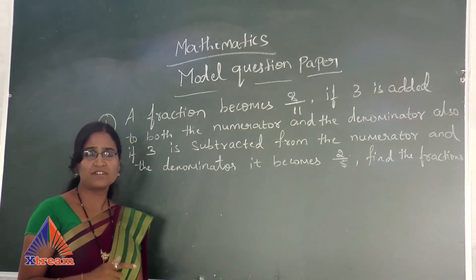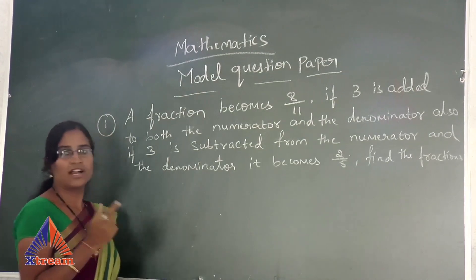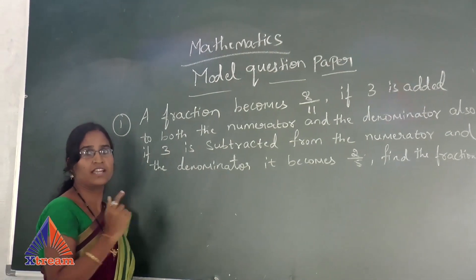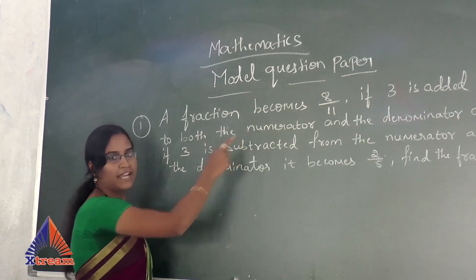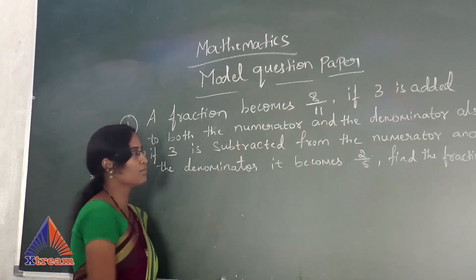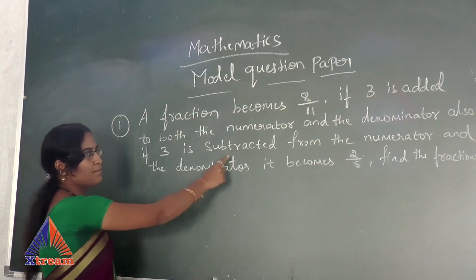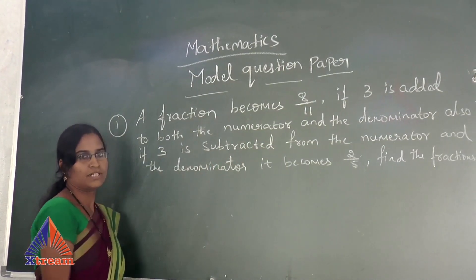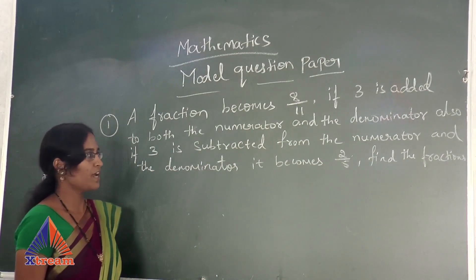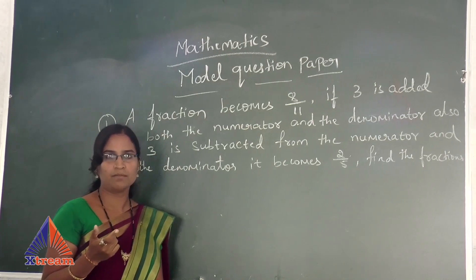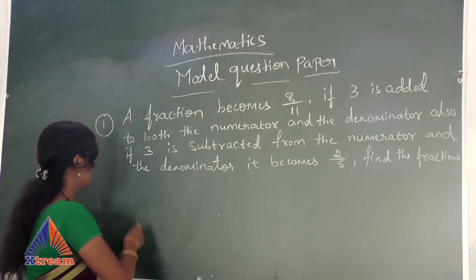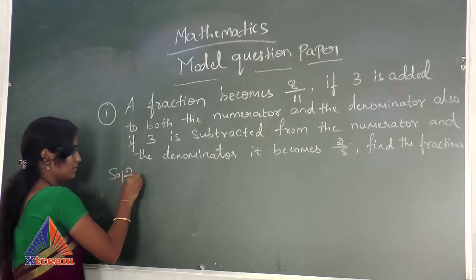First, we have to understand the question — what they have given. A fraction becomes 8 by 11 if 3 is added to both the numerator and the denominator. Also, if 3 is subtracted from the numerator and the denominator, it becomes 2 by 5. Find the fraction. So first we have to know what a fraction is.